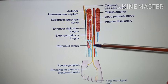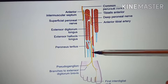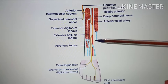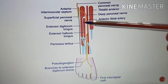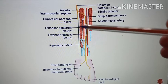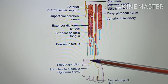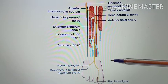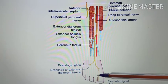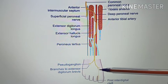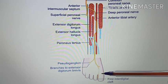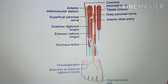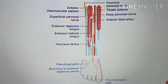The branches given by the deep peroneal nerve include: muscular branches to the muscles of the anterior compartment of the leg — tibialis anterior, extensor hallucis longus, extensor digitorum longus, and peroneus tertius; a branch supplying extensor digitorum brevis on the dorsum of the foot; cutaneous branches to the first interdigital cleft (adjacent sides of the first and second toes); and articular branches to the ankle joint, tarsal joint, tarsometatarsal joint, and metatarsophalangeal joints.